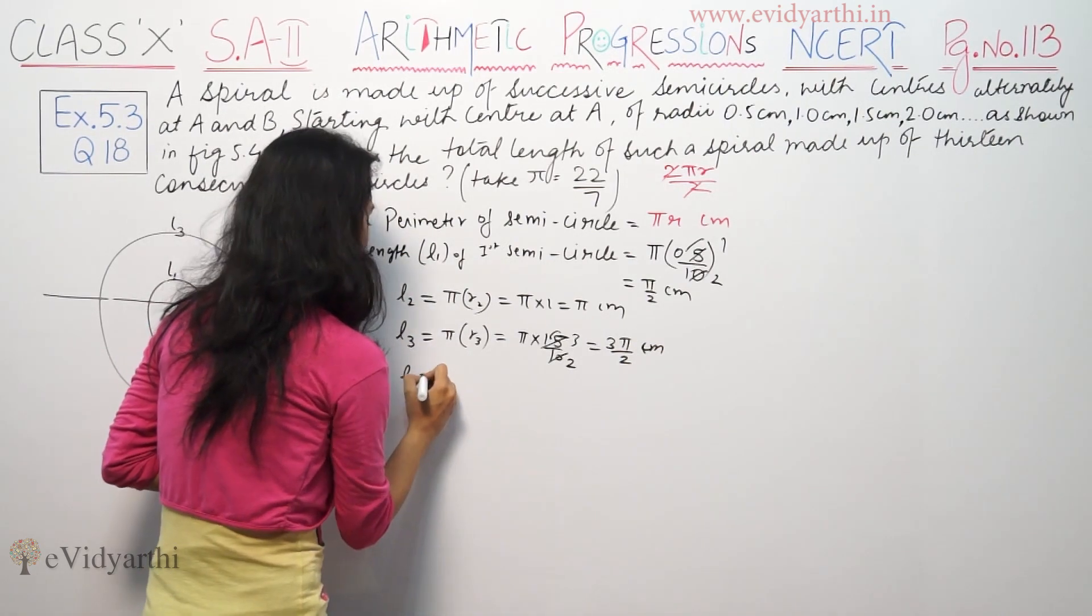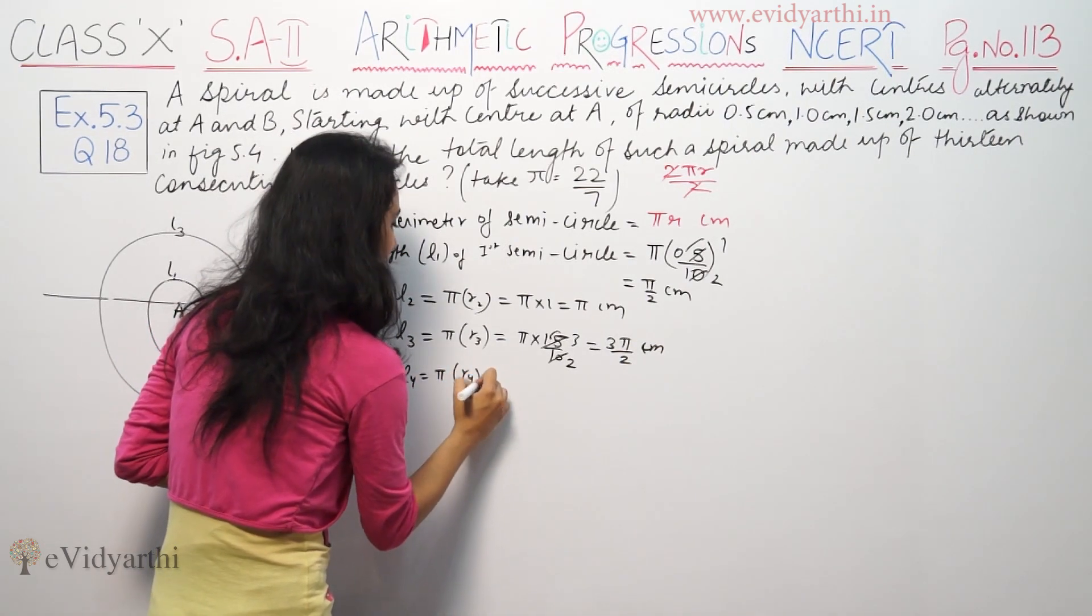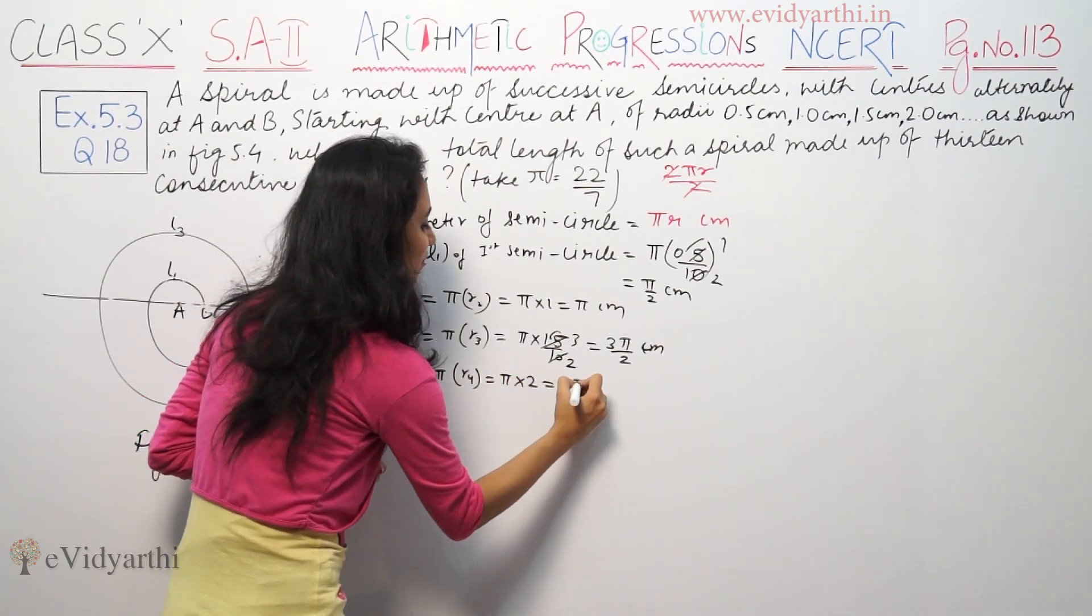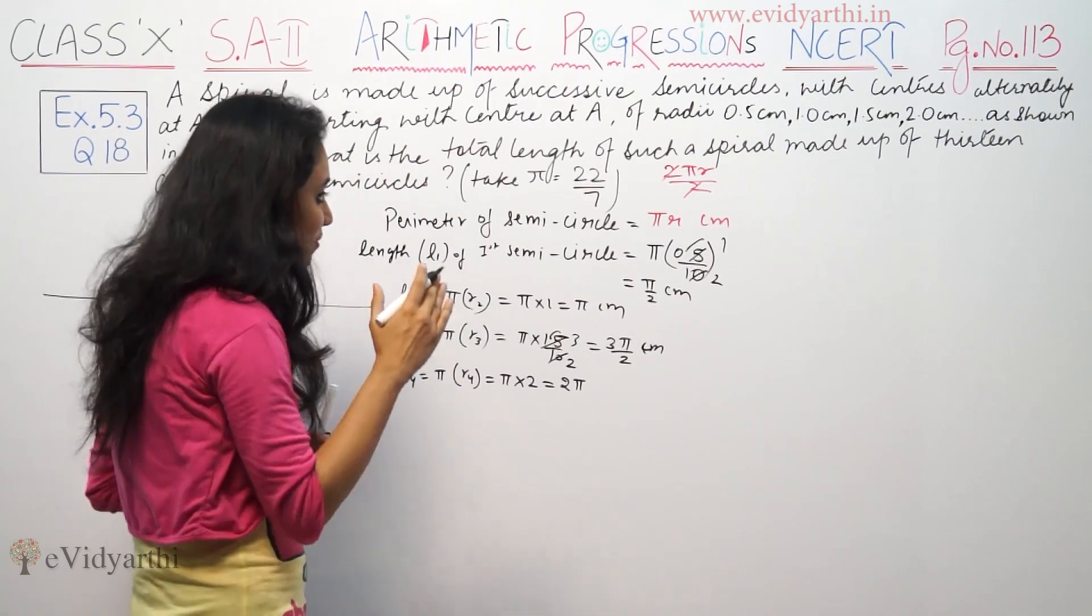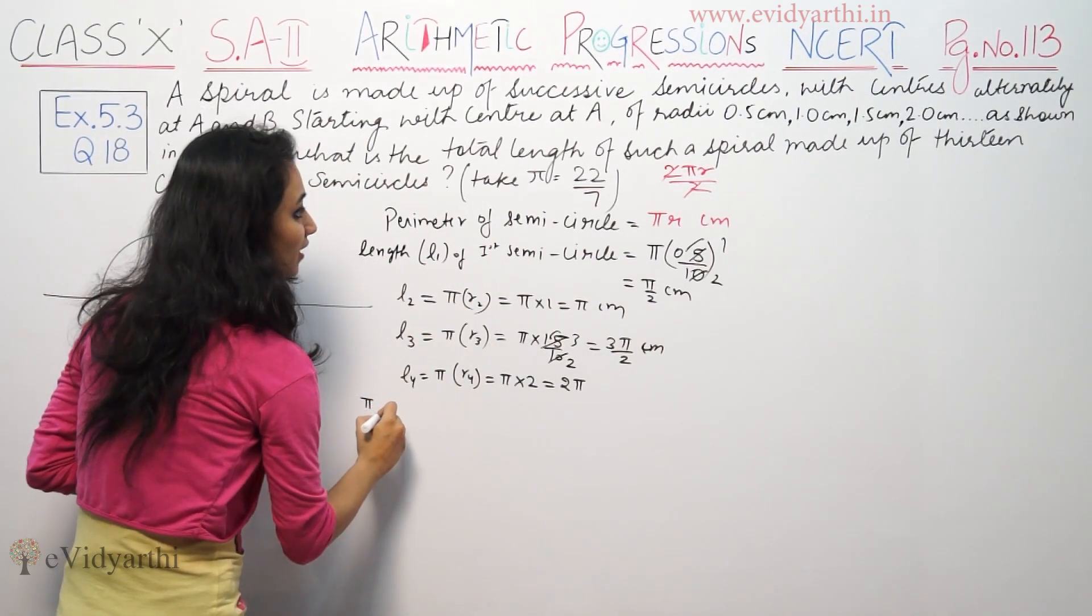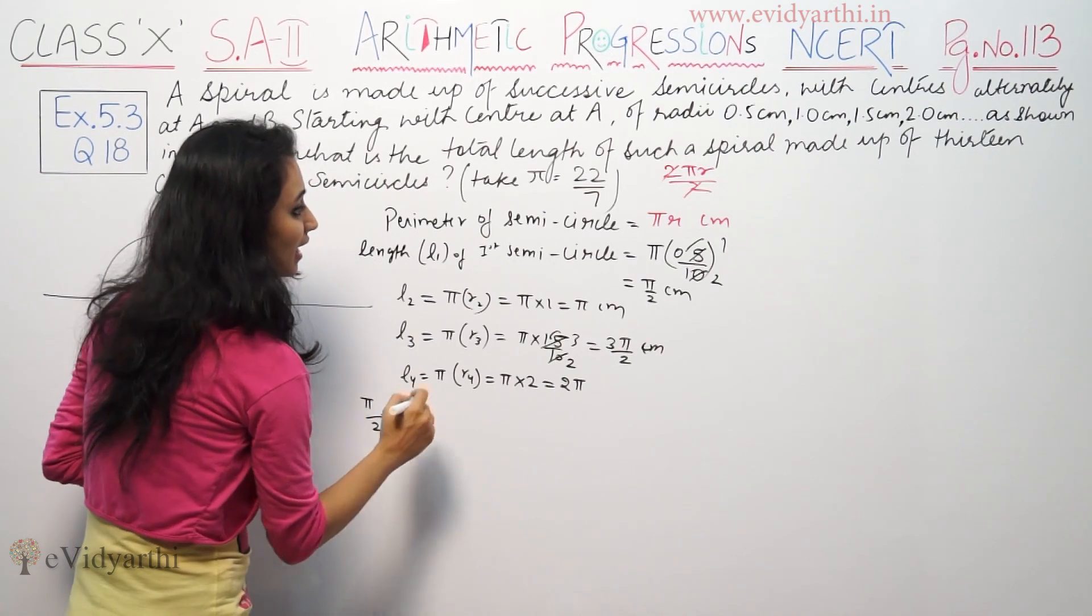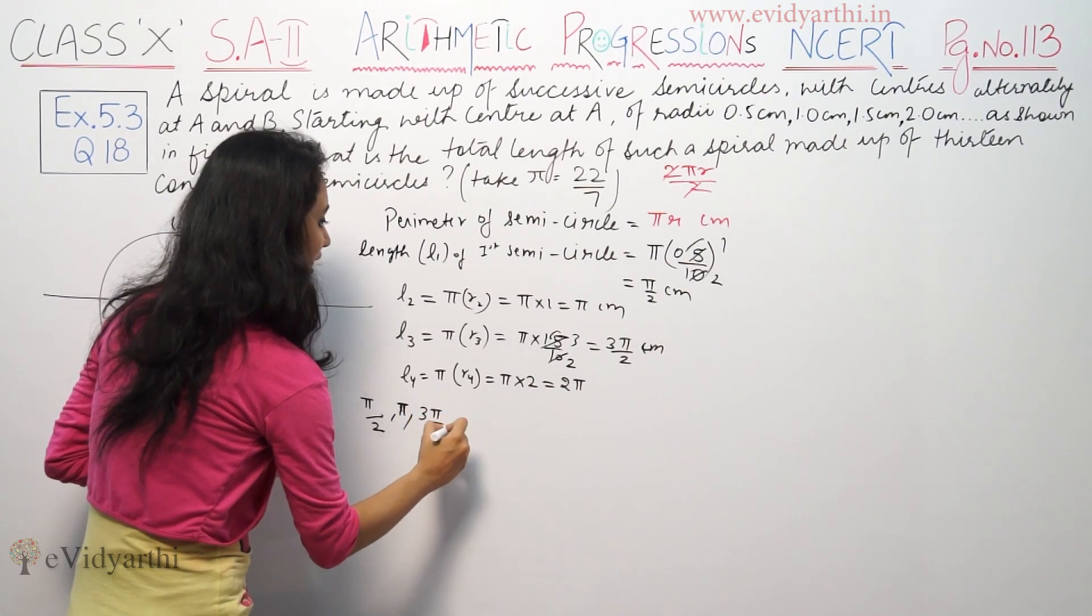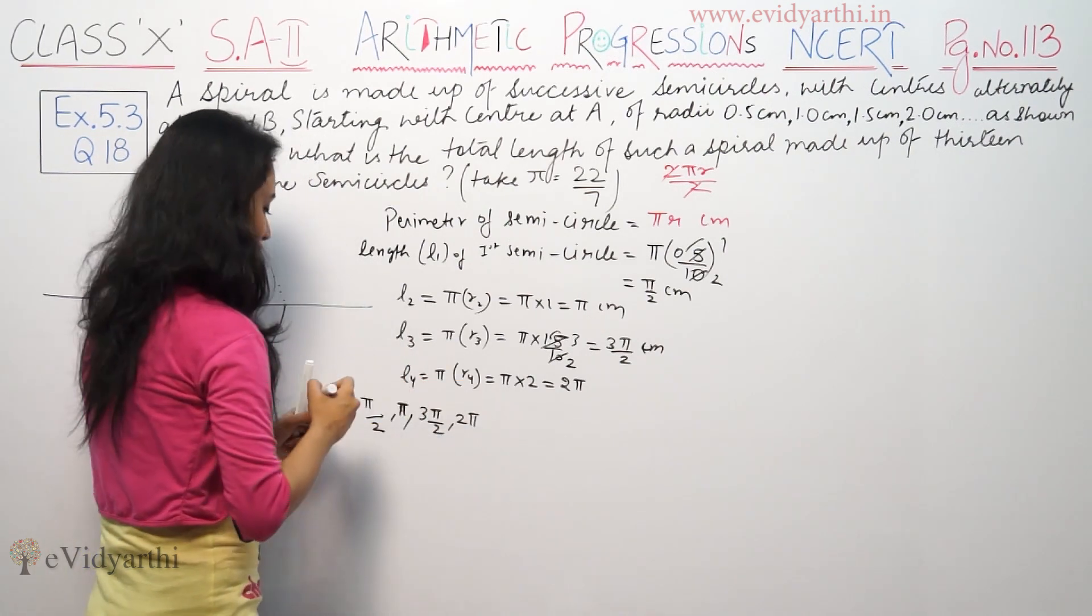Then L4. πR4. π as it is, this is 2, so we have 2π. So we have a series: π/2, then we have π, then we have 3π/2, then we have 2π.